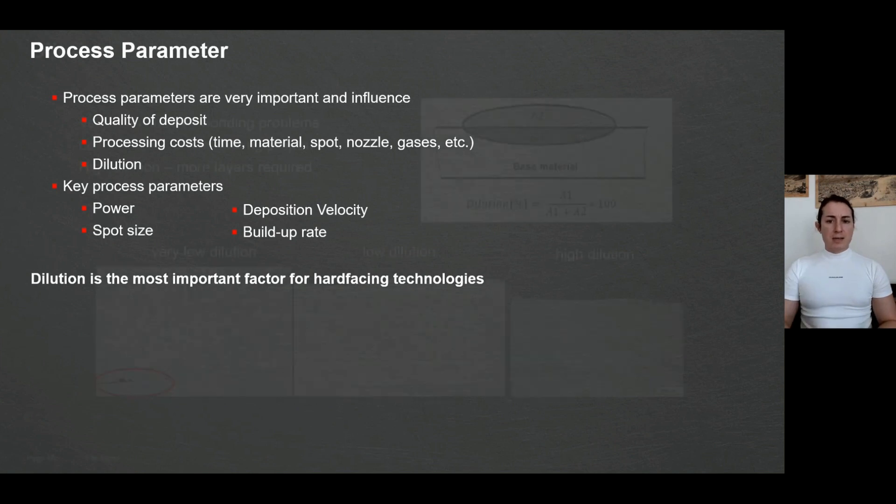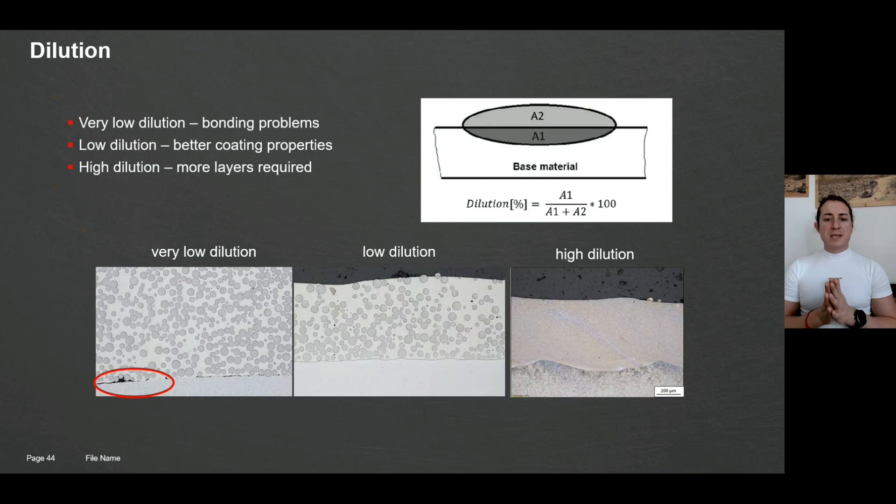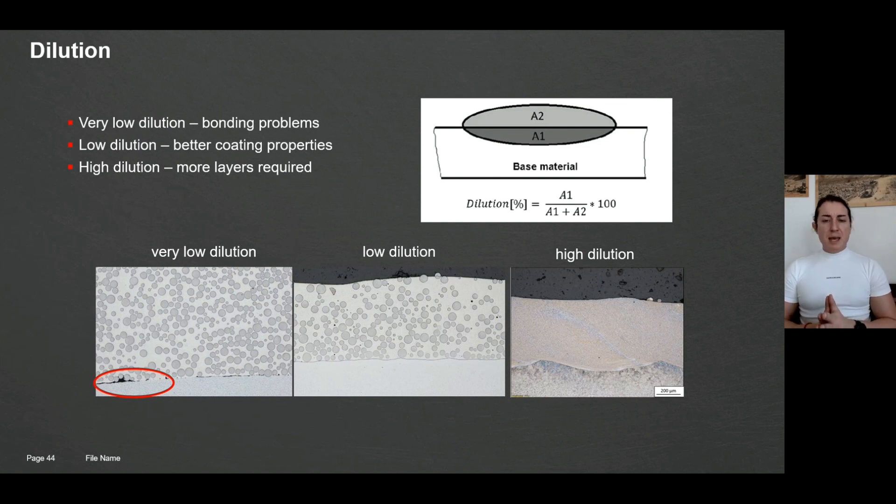So what is dilution? Dilution is nothing else as an interaction of your base material with your coating. If you take a conventional hard facing process which might be MIG welding, in this case your energy input is so strong on substrate that you mix it so much that 30 percent of your base material is actually diffusing to your coating, changing the properties of your coating extremely.